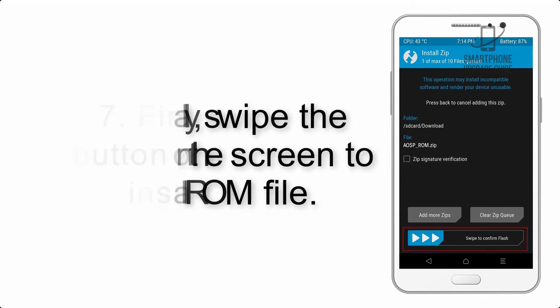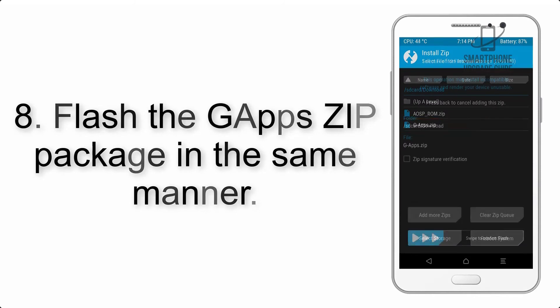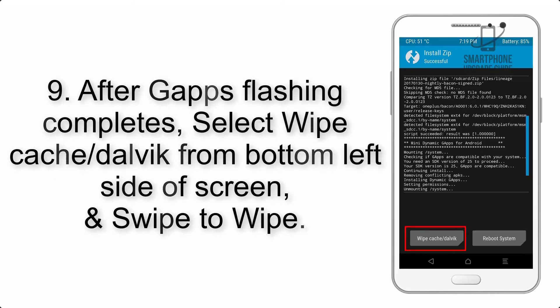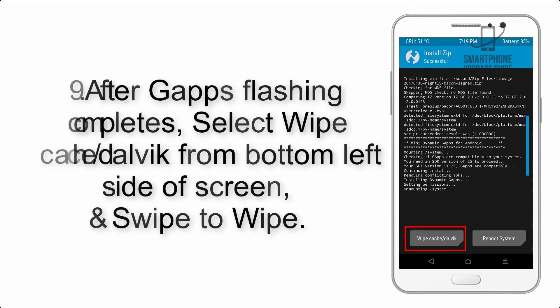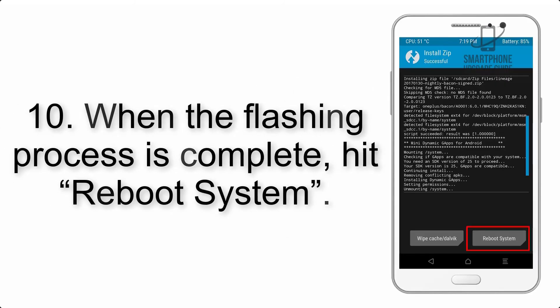Step 8: Flash the gapps zip package in the same manner. Step 9: After gapps flashing completes, select Wipe Cache and Dalvik from the bottom left side of the screen and swipe to wipe.